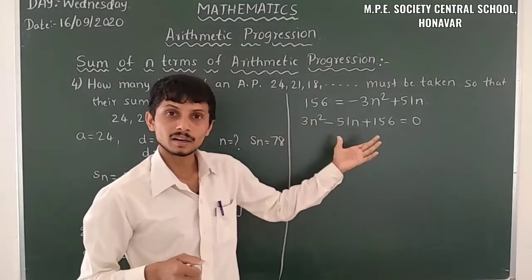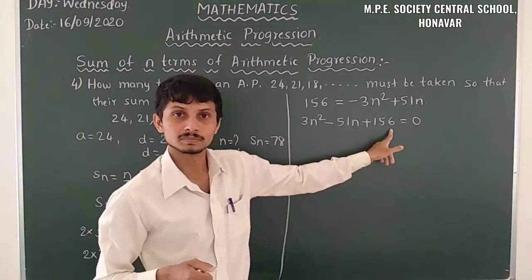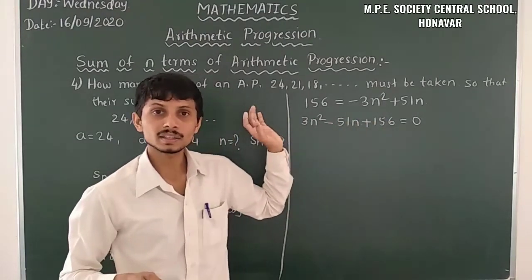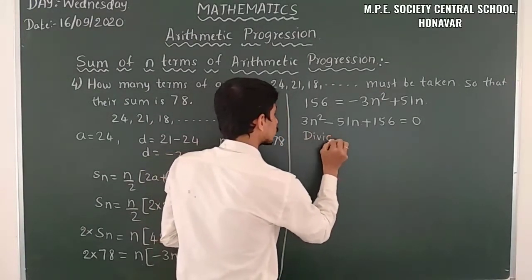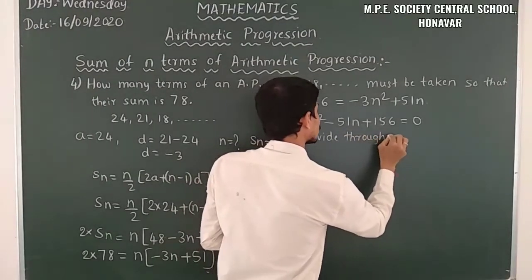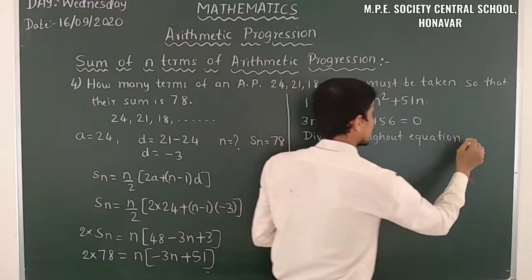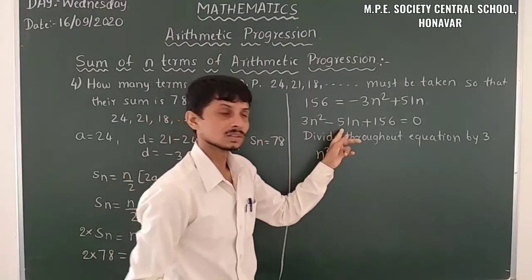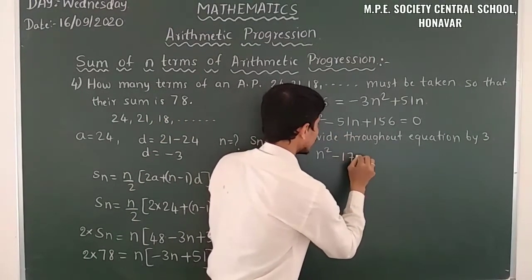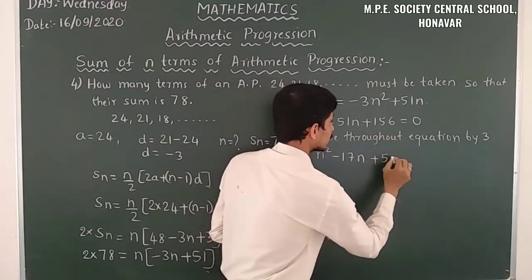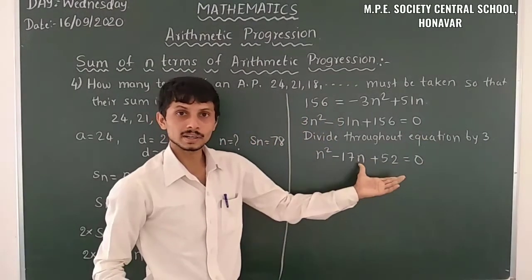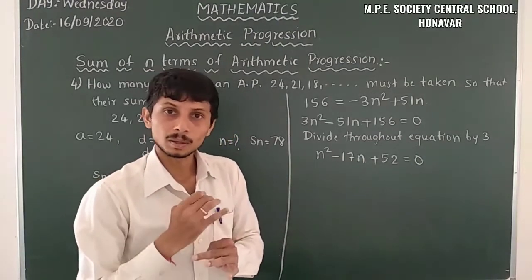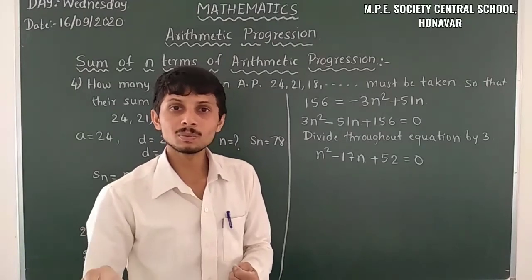We divide the entire equation by 3, since all terms are multiples of 3. This simplifies the quadratic equation. After dividing by 3, it becomes N² − 17N + 52 = 0. You can use any method to solve this quadratic equation — whether factorization, completing the square, or the quadratic formula.